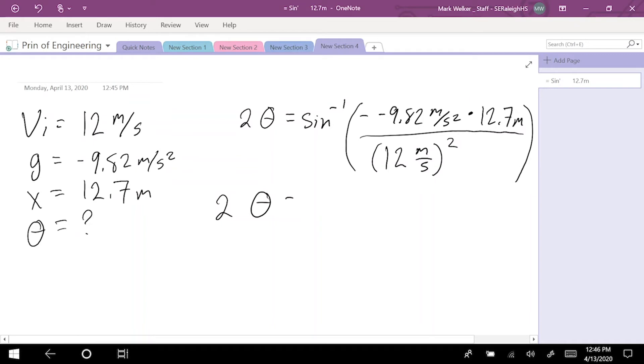2 times theta equals sine negative 1 of 9.82 times 12.7 meters squared over second squared. And that's going to be, when we square that, 12 times 12, you may remember 144 meters squared over second squared. Units cancel out.